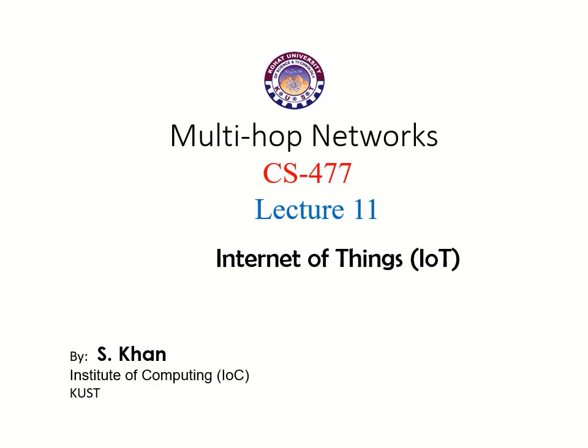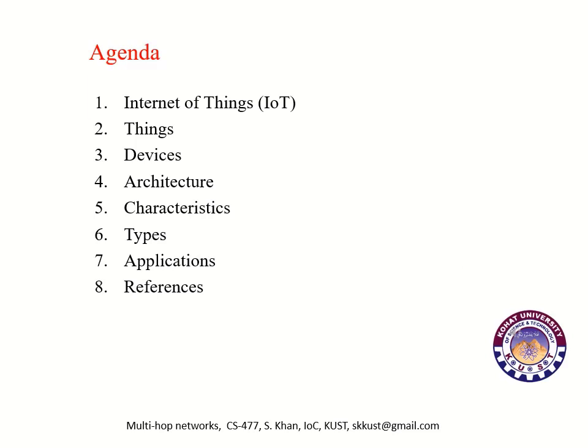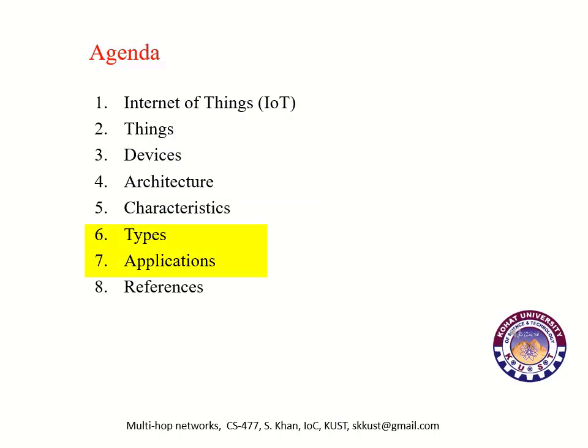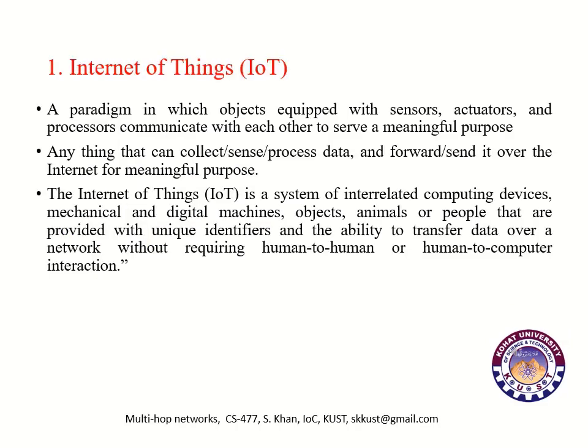Course title is Multi-Hop Network, course code CS477. Today is lecture number 11. The topic is Internet of Things (IoT). Today we will cover: what is Internet of Things, we will define things, different devices, architecture and characteristics of Internet of Things, different types, and different applications of Internet of Things.